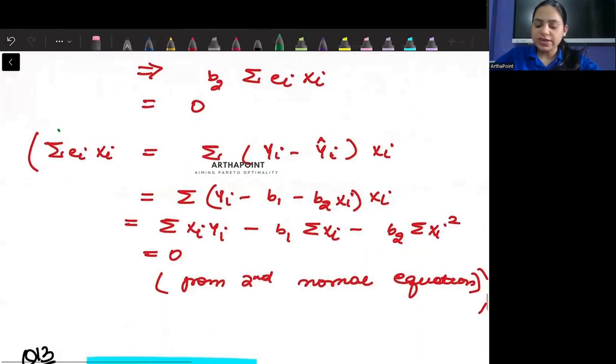Okay. So this proves that summation ei Xi is in fact zero. In order to prove this, you can just open ei as Yi minus Yi hat.